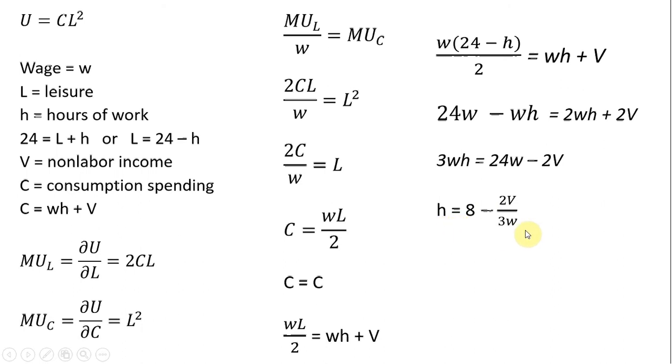So hours of work equals the following. It's a function of non-labor income and the wage. And one thing to note here: if V were to increase, hours of work would fall. And if W would increase in this equation, hours of work would increase.